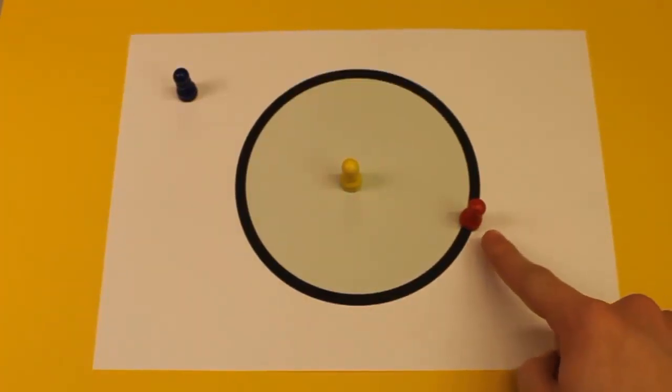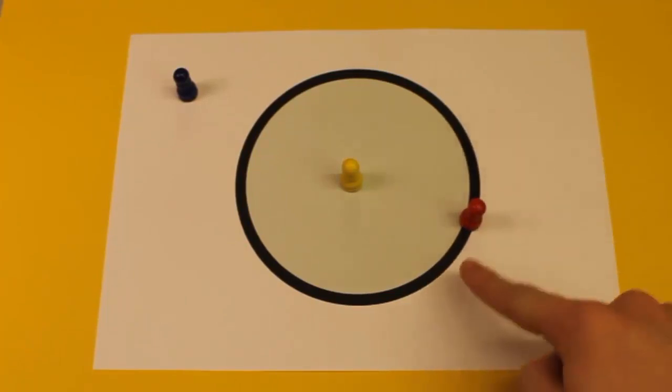Als nächstes kommen wir zum roten Kegel. Dieser steht, wie ihr sehen könnt, genau auf der Kreislinie.